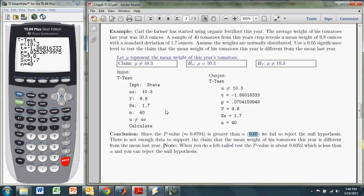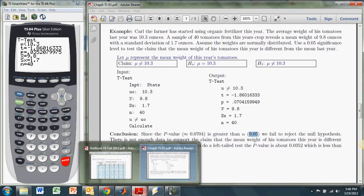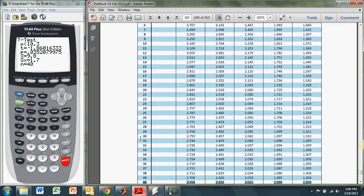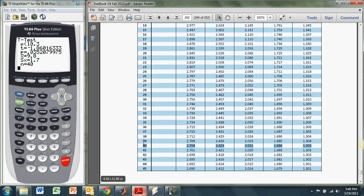One thing the TI doesn't do is it doesn't give you the critical values of t, and I would probably prefer it does, but it doesn't really have to because it gives you the p-value. But getting the critical values is not hard if you use the table in the back of the book. So if we go to the t-table, our degrees of freedom is 39, because our sample size is 40, degrees of freedom 39.